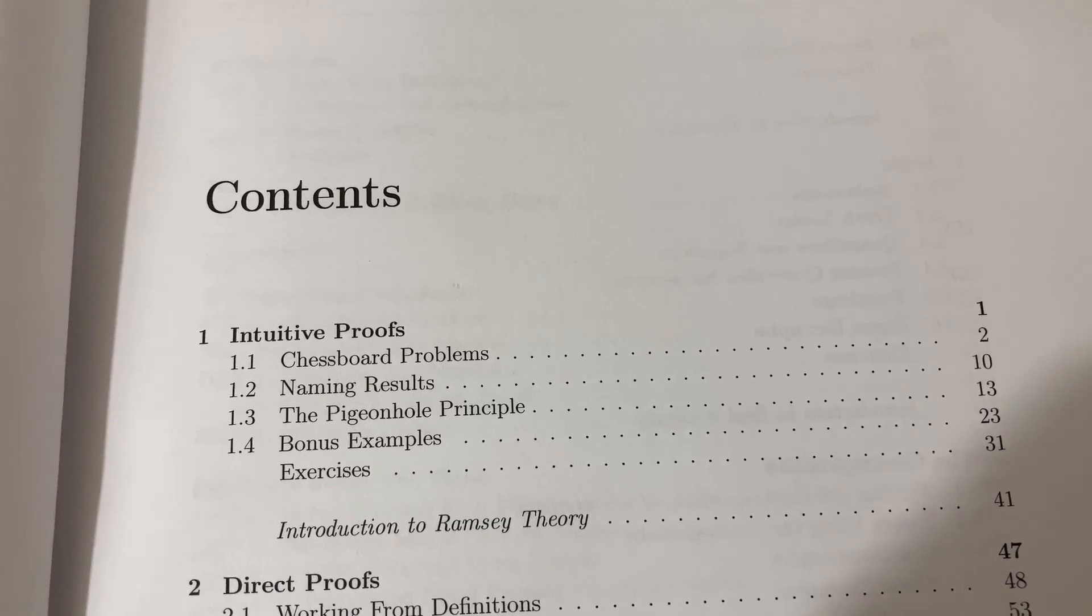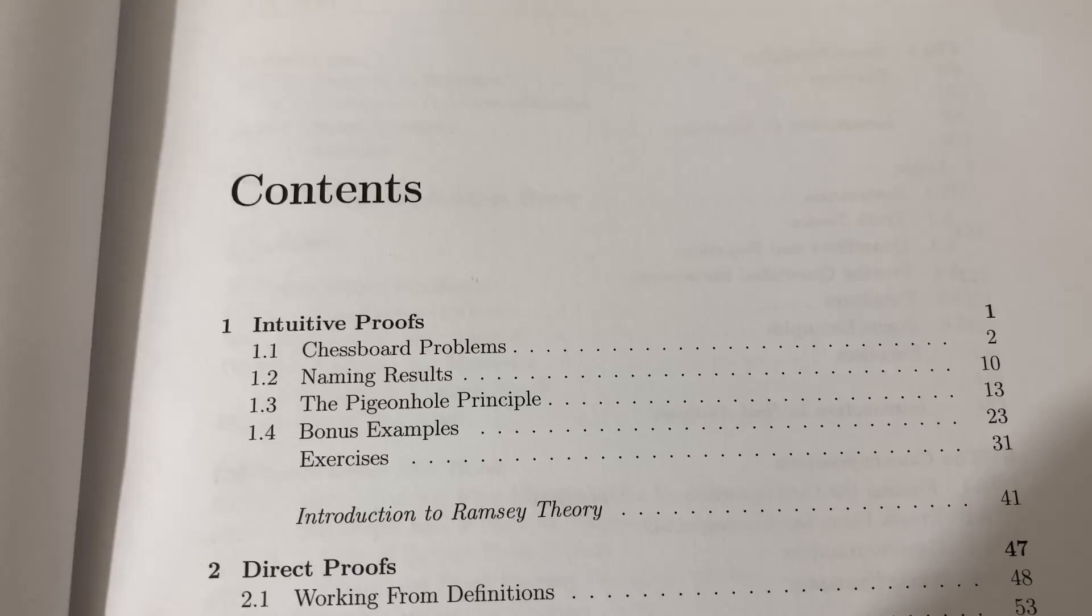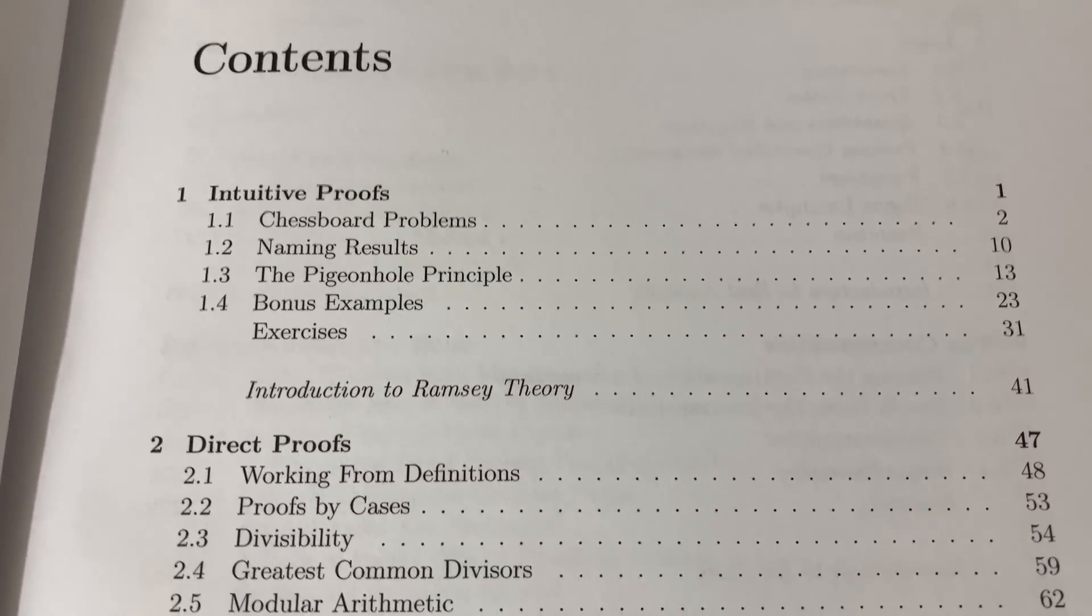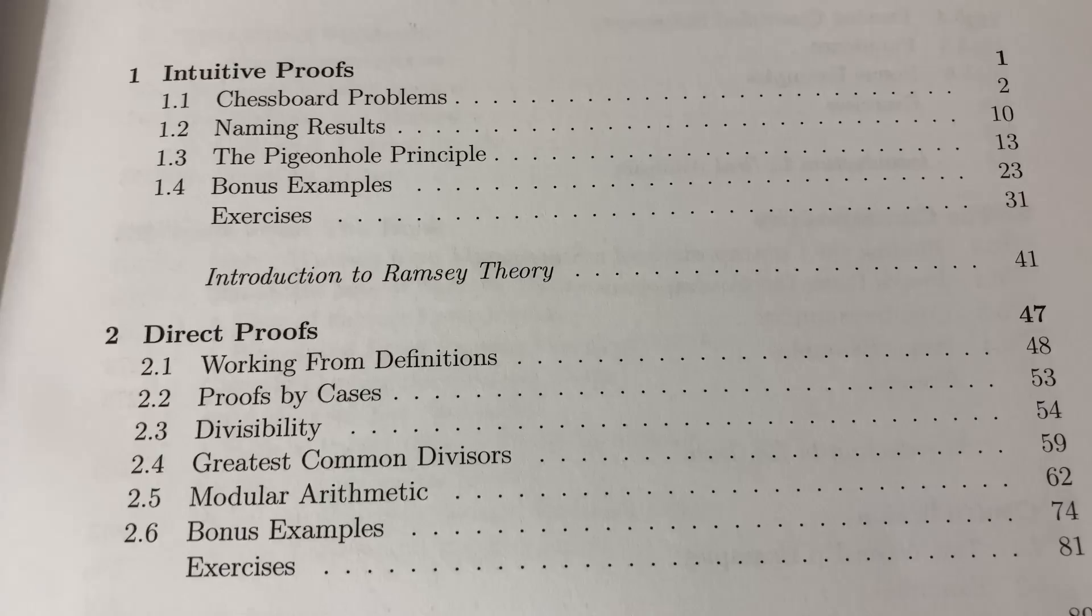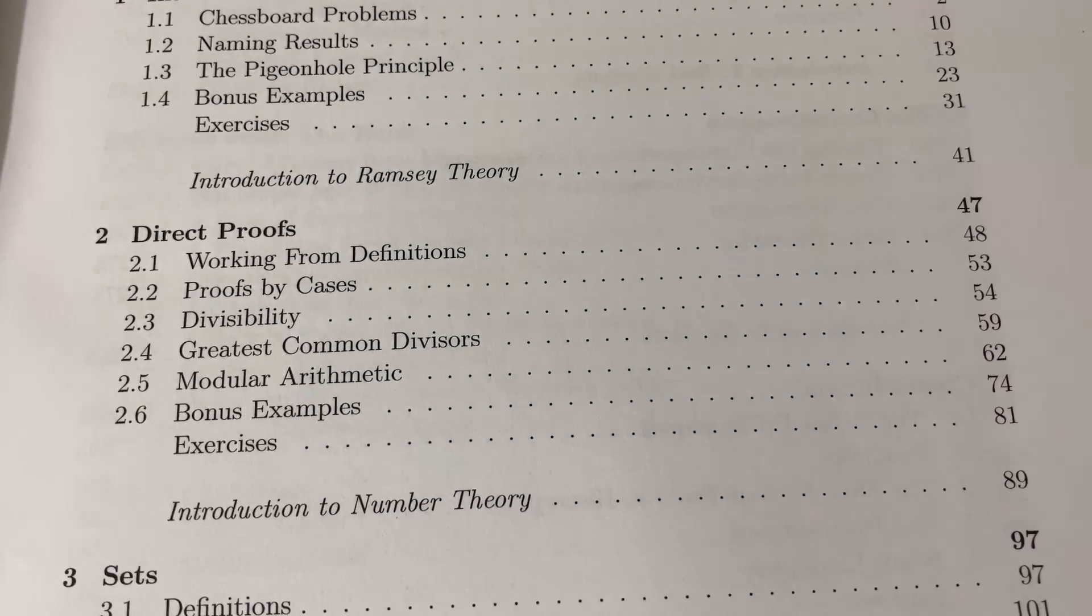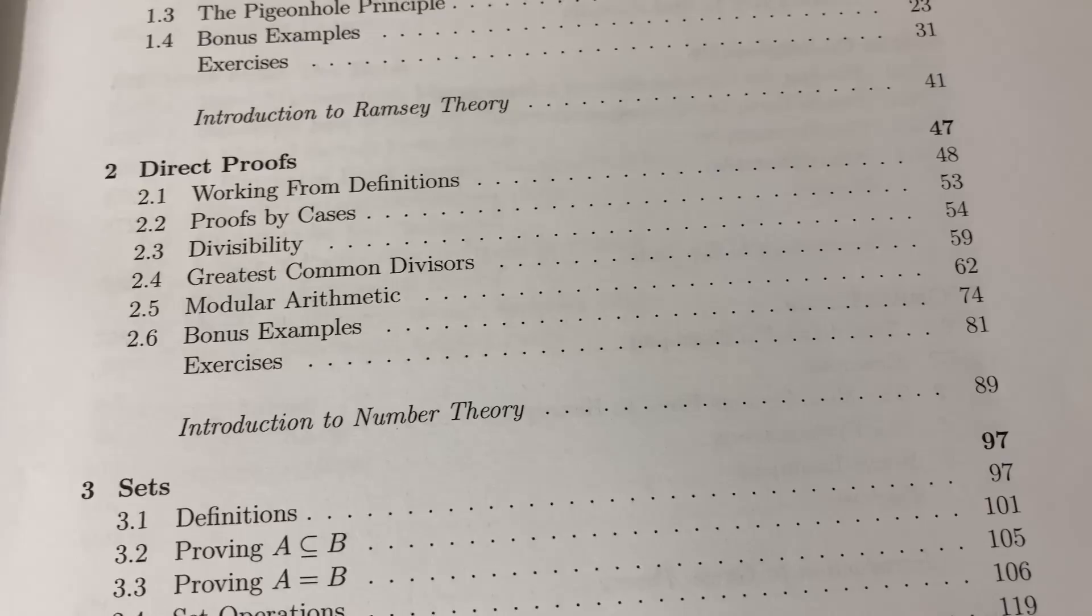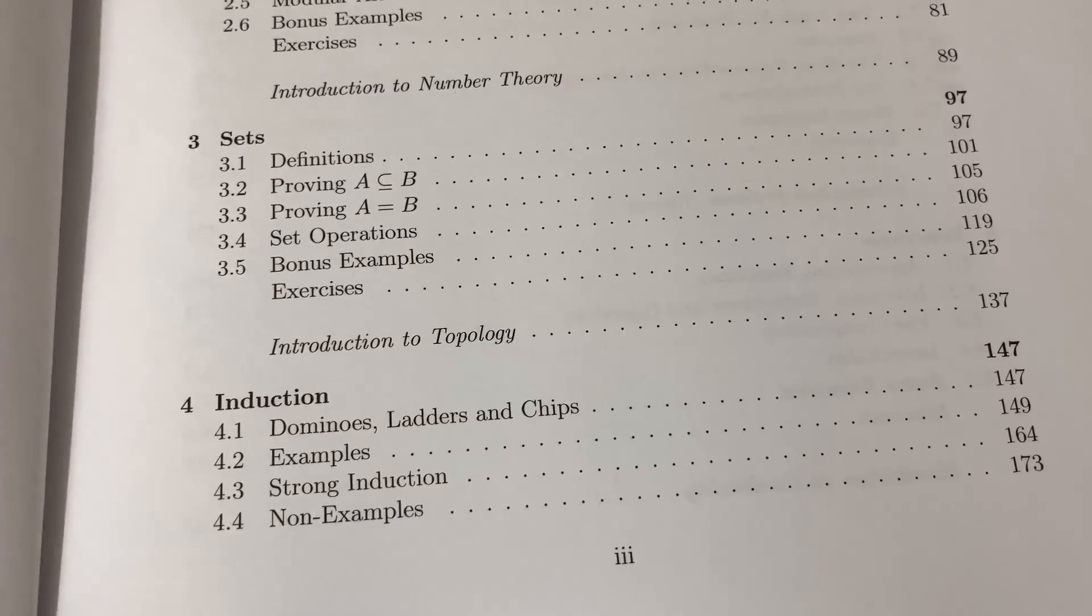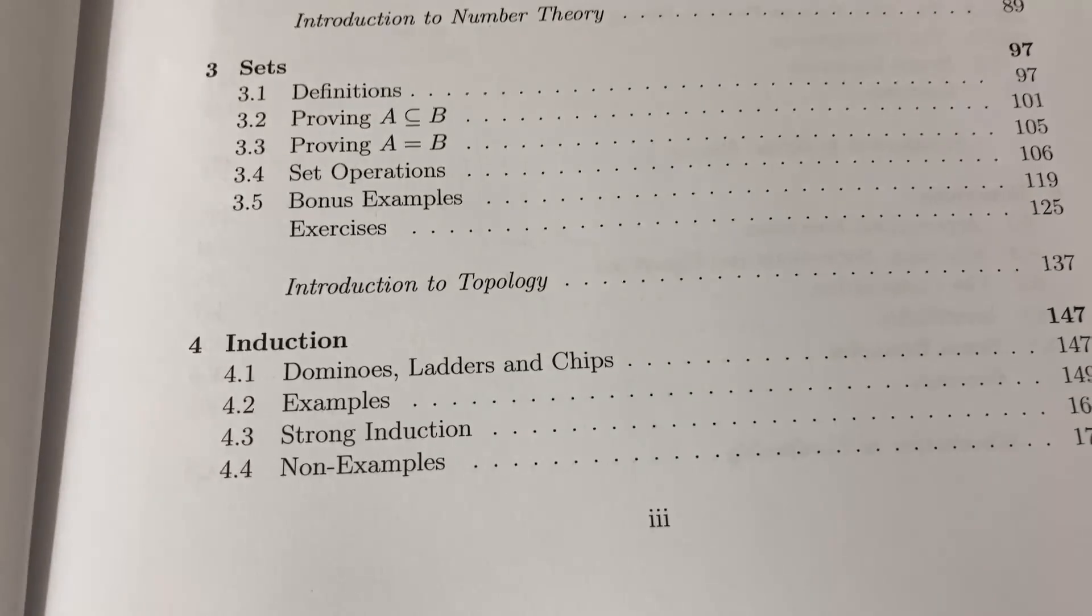One of the wonderful things about this book is the content. It has really unique topics compared to other proof books out there. Starts with intuitive proofs, and then you see he throws in this little subsection, introduction to Ramsey theory. Then direct proofs, and then he throws in an introduction to number theory. Sets, he throws in an introduction to topology, I think that's really well timed, and then induction.